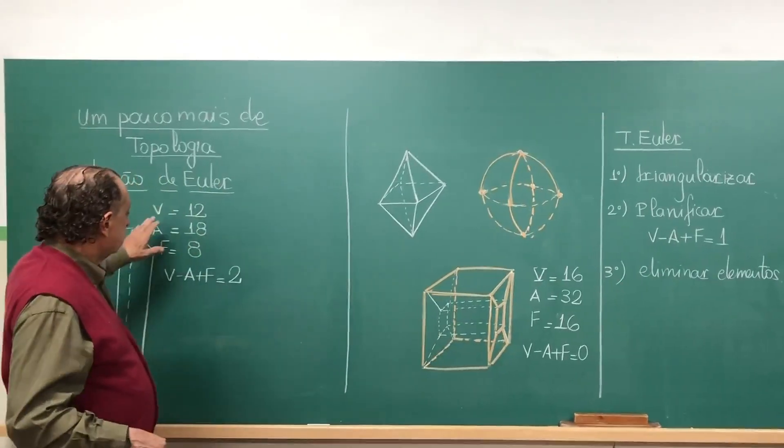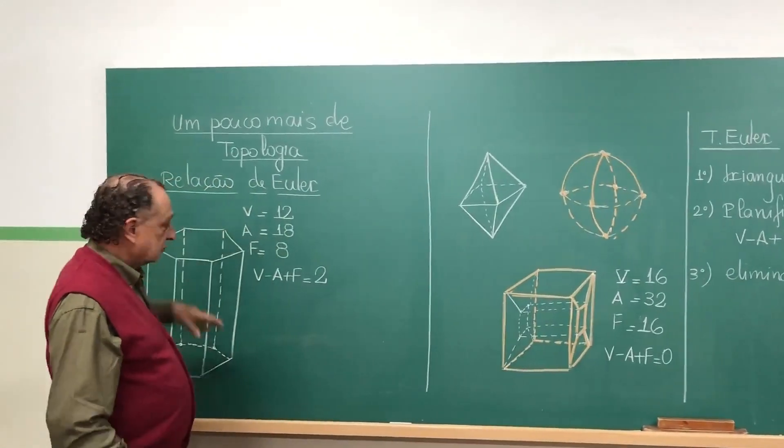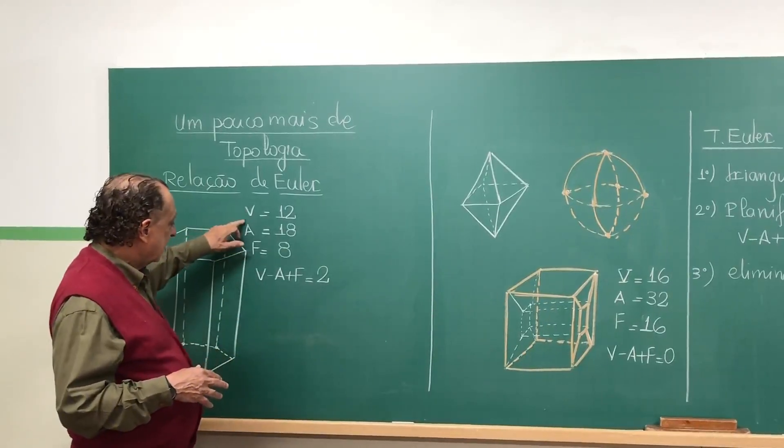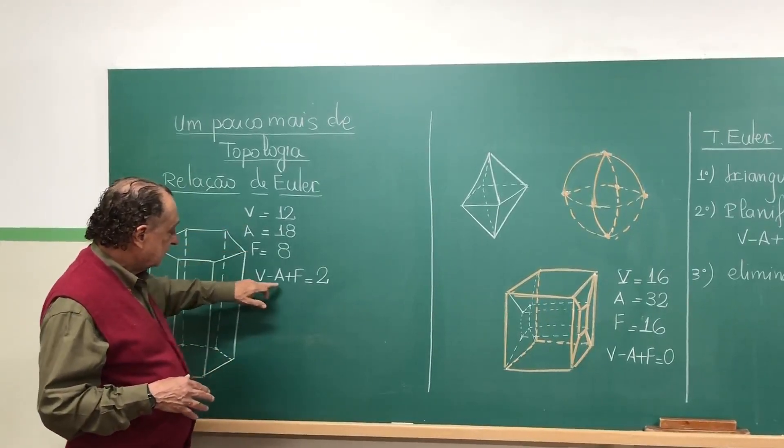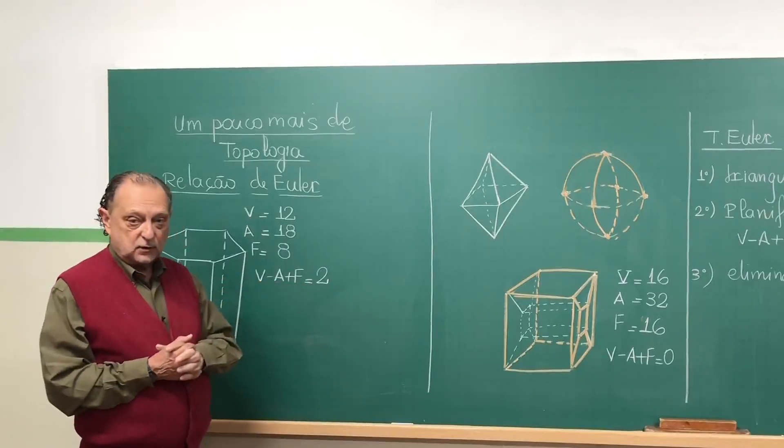The relation of Euler is the one that says that in a convex polyhedron, the number of vertices, arestas and faces is connected by the relation V-A+F equal to 2.